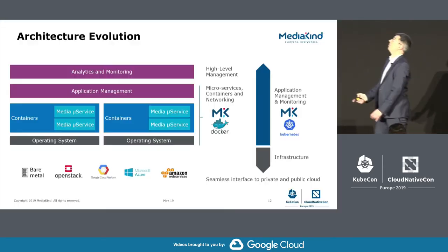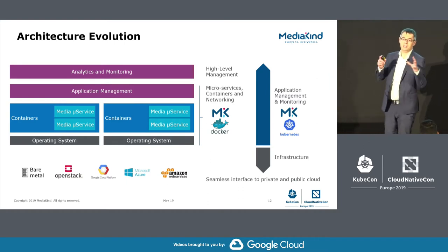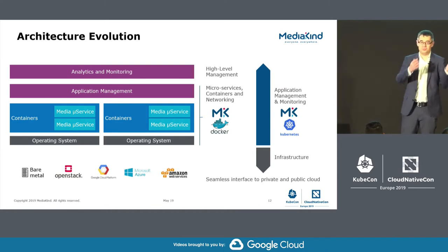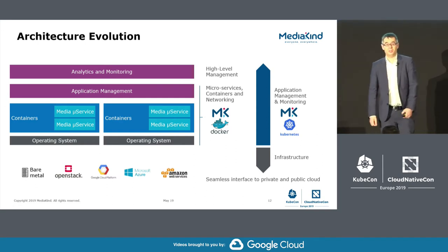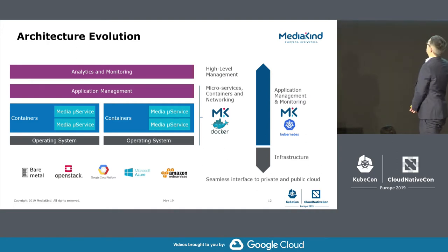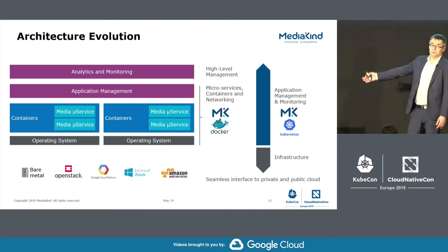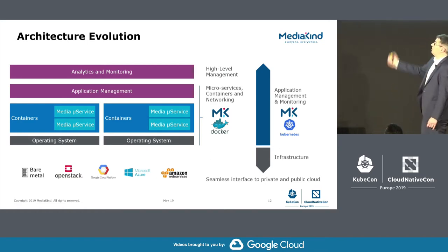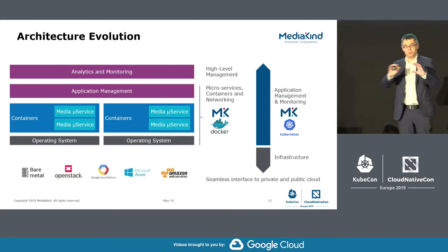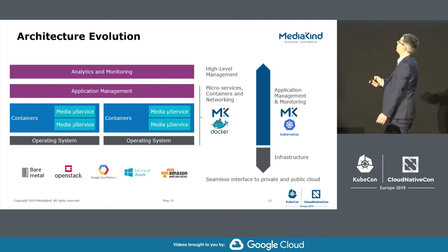A couple of years ago we started taking our appliances, our monolithic software, and cutting it into microservices, packaging and deploying them. We eventually adopted Docker to build containers and deploy above Kubernetes. We started on bare metal since our software first ran on servers, then moved to OpenStack, and now support all major public cloud providers. We've also had to change our application layer — what we used to call our controller layer — adapting it to this new world, along with analytics and monitoring.